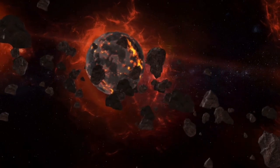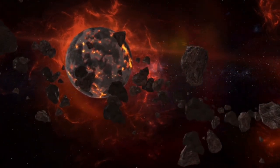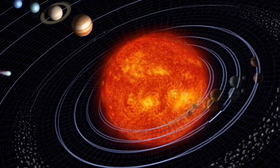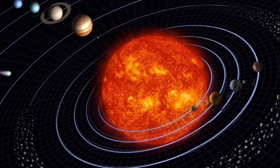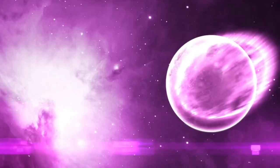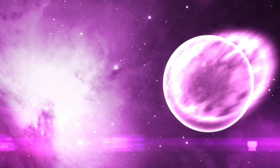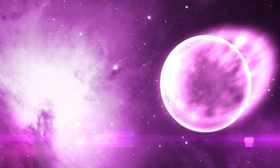Proxima b contends with severe ultraviolet radiation, many times more potent than the sunlight Earth receives. This extreme radiation threatens even the simplest atoms, like hydrogen, destabilizing vital elements such as oxygen and nitrogen.